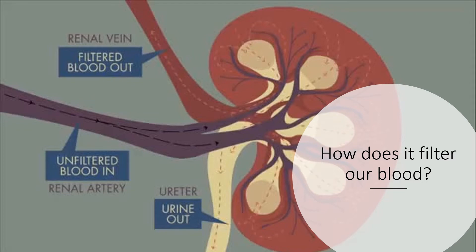The filtered blood will then leave and start circulating around your body, doing the work it has to do. All the waste that's trapped in your kidneys is going to stay there and form a yellow liquid waste called urine. So the urine remains in your kidneys and the filtered blood goes back to circulate around your body.